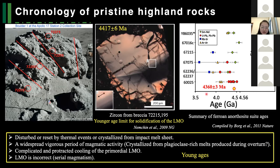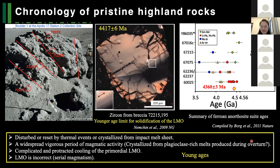However, the ages of ferroan anorthosites are much more complicated — they have a wide range, and even for a single rock, different techniques may reveal different ages. Some ages may be reset by thermal events. There are also many ferroan anorthosites younger than 4.4 billion years. For example, sample 60025 is suggested to have a crystallization age of 4.3 billion years — younger than expected. So the cooling of the lunar magma ocean may be more complicated and prolonged. It may have cooled over a longer period than we thought, or perhaps the lunar magma ocean hypothesis is wrong — maybe no magma ocean existed.